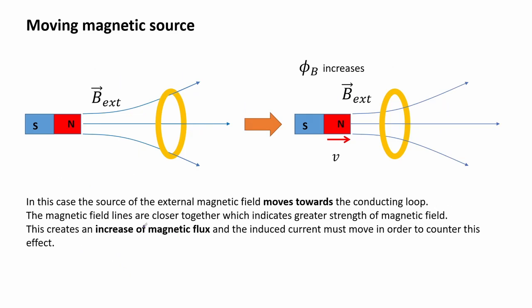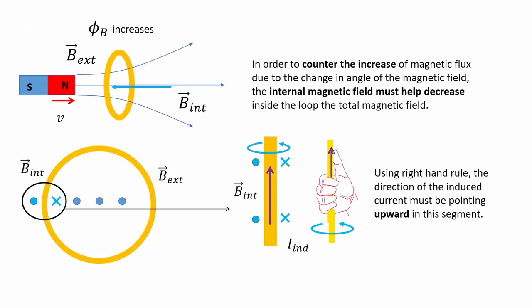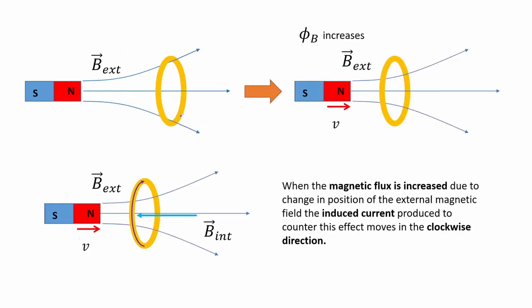In this case the source of the external magnetic field moves towards the conducting loop. The magnetic field lines are closer together, which indicates greater strength of the magnetic field. This creates an increase of magnetic flux and the induced current must move to counter this effect. The internal magnetic field must help decrease the total magnetic field inside the loop. Using the right hand rule, the direction of the induced current must be pointing upward in this segment. The induced current moves in the clockwise direction.